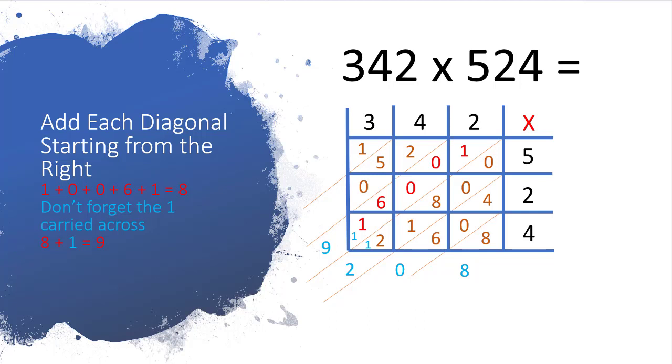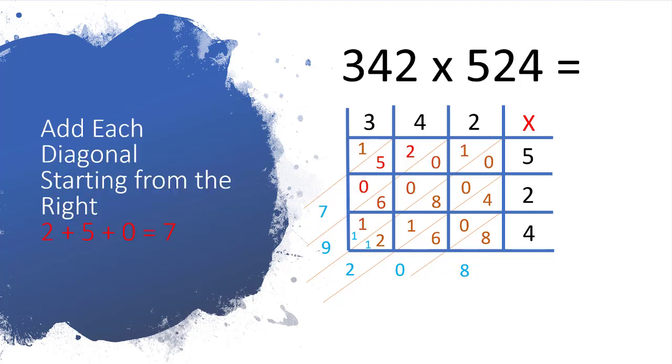Okay, so now we add up the next diagonal which is 1 plus 0 plus 0 plus 6 plus 1 plus 1. So the red ones there come to 8. That's 6 plus 1 is 7, plus 1 is 8, and we mustn't forget that 1 that we've moved across or carried across, so that makes 9. Let's move to the next diagonal. So 2 plus 5 plus 0 is 7, so we write 7 down.